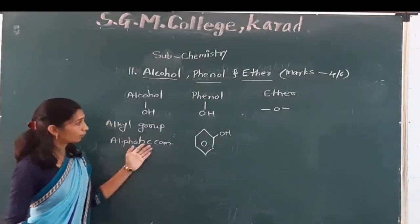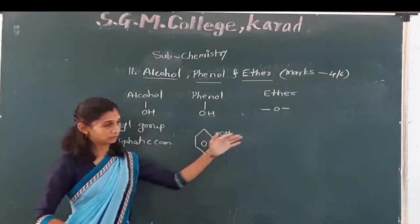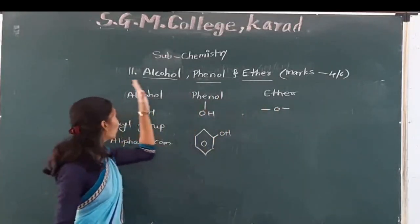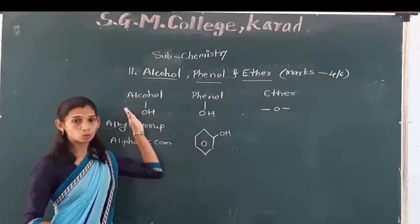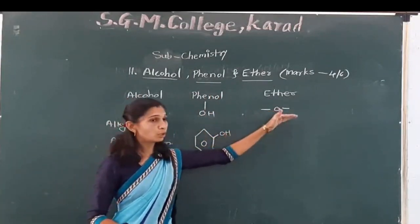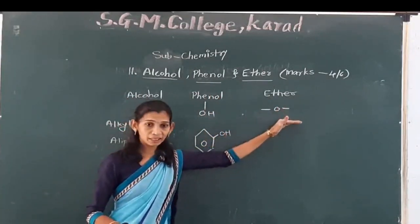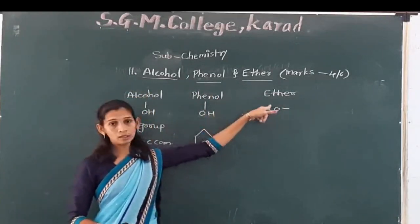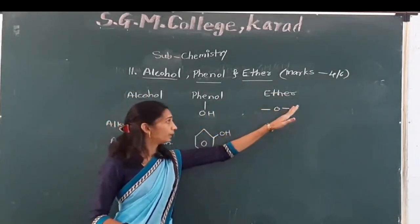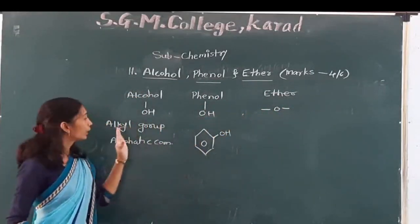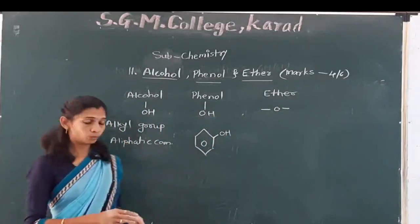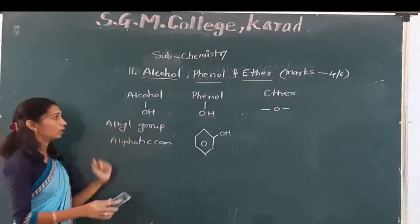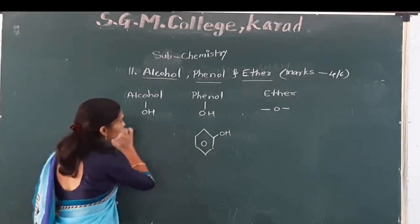In case of ether, ether is an anhydrous form of alcohol. That means a water molecule is removed from alcohol to get ether. These are the basic parts of ether.